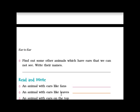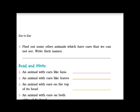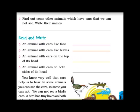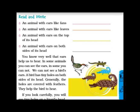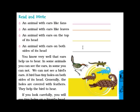Animal with ears like leaves — it looks like leaves. Rabbit has ears like leaves. An animal with ears on the top of its head — rabbit again has ears on top of its head. An animal with ears on both sides of its head — the dog has ears on both sides. So write down: dog.